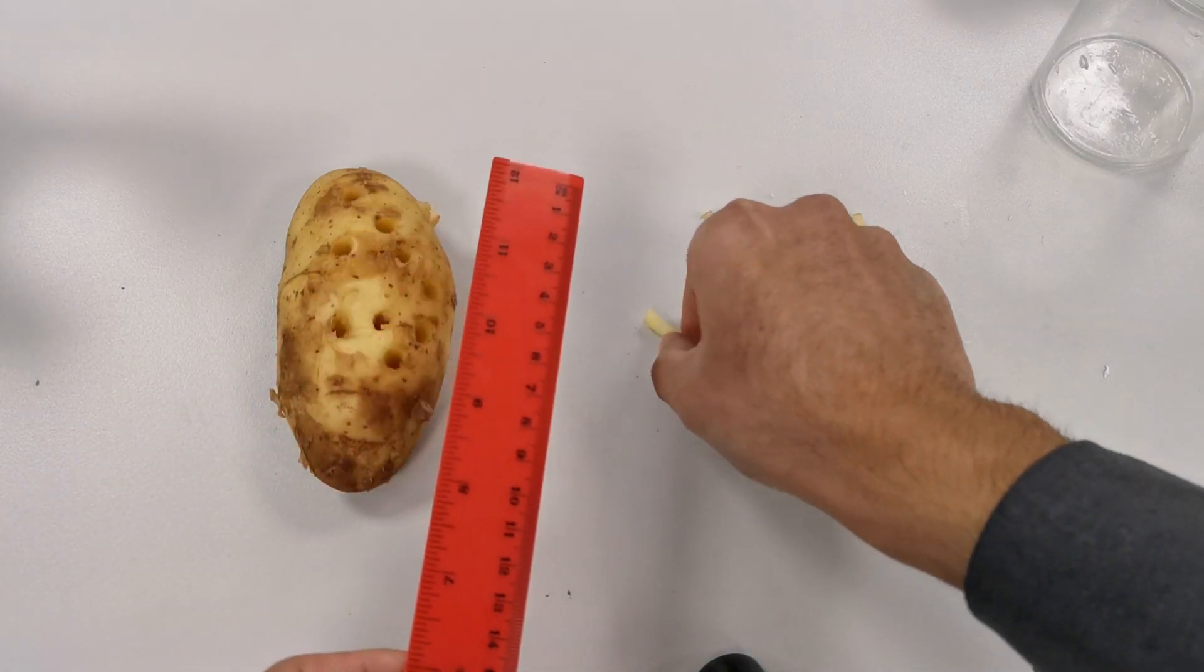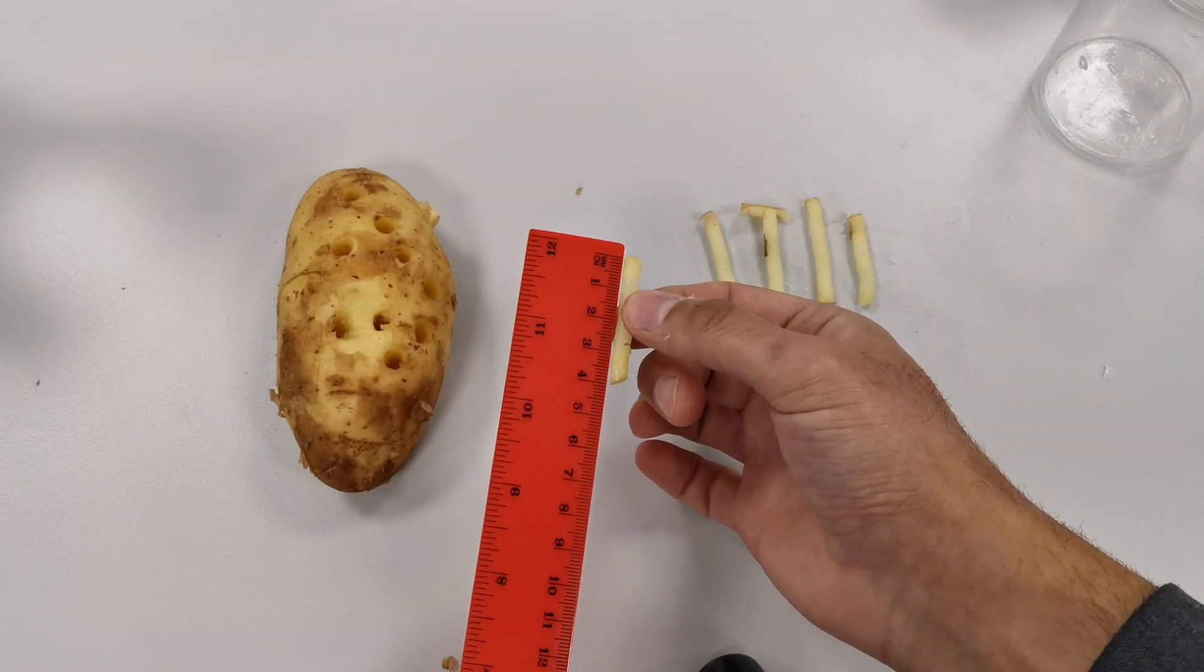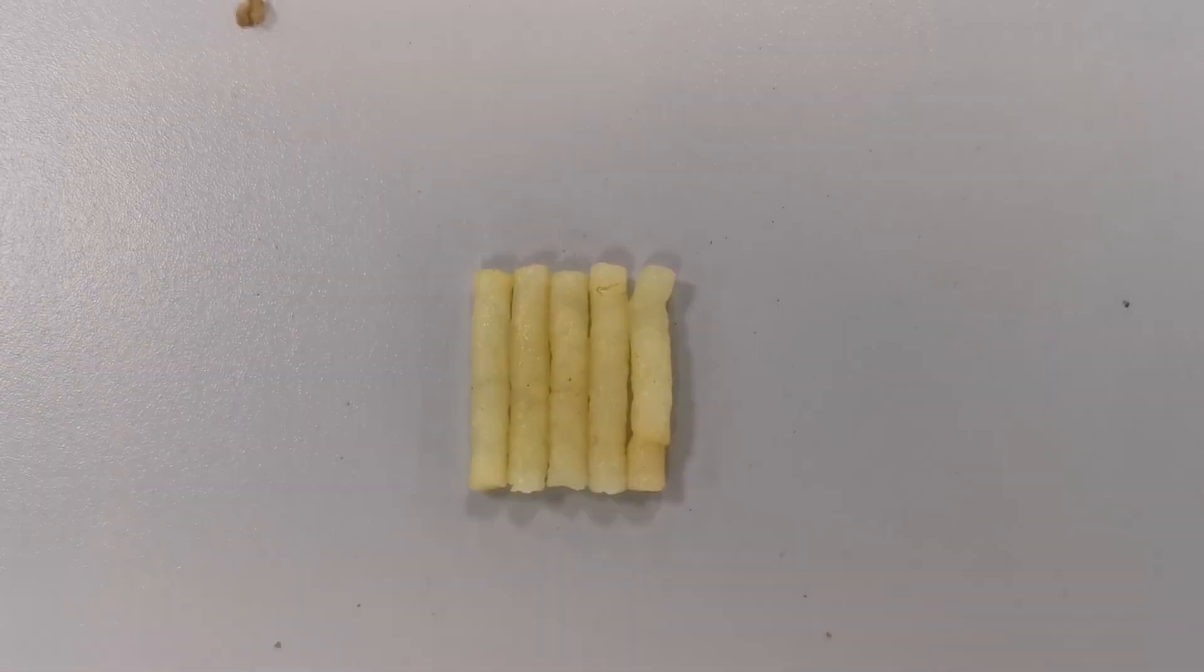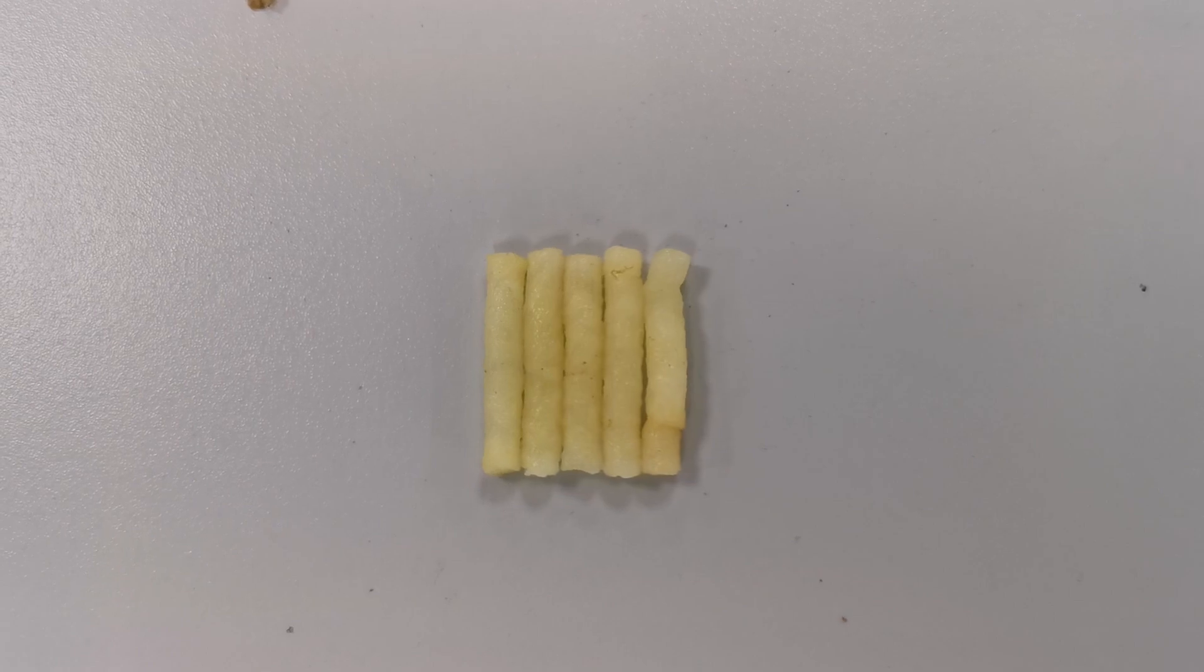Now I'm going to cut the cylinders to make sure they're all the same length. I'm going to make mine approximately three centimeters in length. Now all of the potato cylinders are the same length.